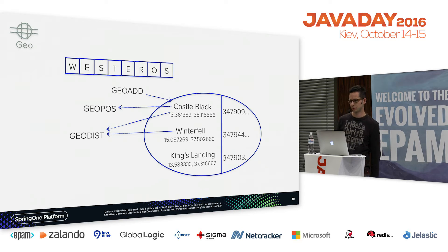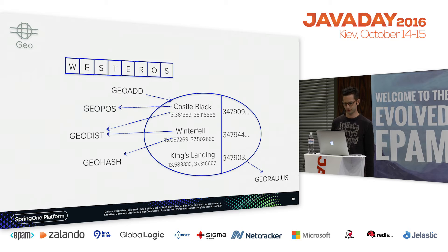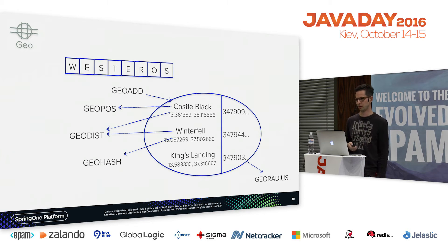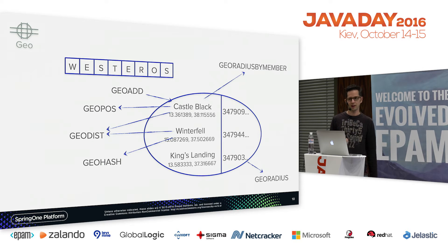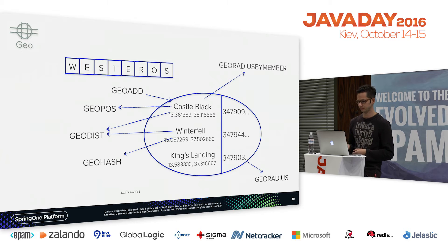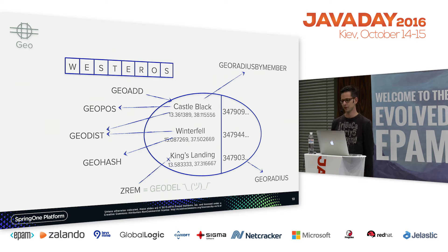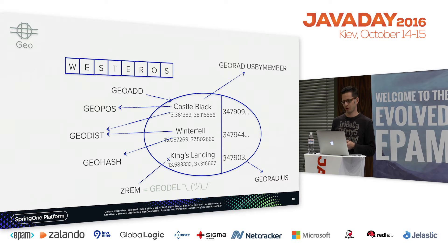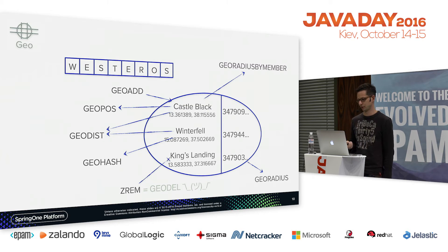You can ask for the distance between two existing points, the geohash representation, and use the GEORADIUS command — you define a point and radius and it gives you all known elements within that radius by interleaving the 64-bit integer score. You can also query elements within range using an existing member as the center with GEORADIUSBYMEMBER. There is no GEODEL command — since it's a sorted set, you remove elements using ZREM. King's Landing almost got destroyed — let's remove it.